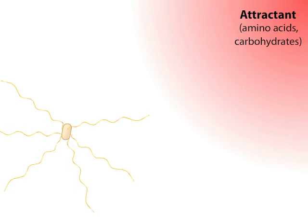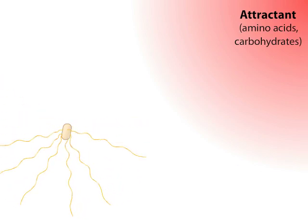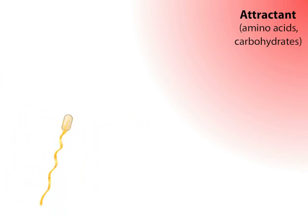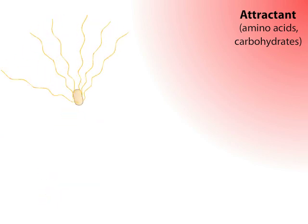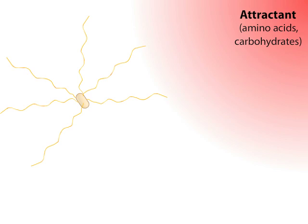E. coli and a variety of other bacteria use flagella to swim toward chemical attractants, such as amino acids and carbohydrates present in media. The bacteria use a mechanism called chemotaxis, in which they sense chemical gradients and modify their motility in response.